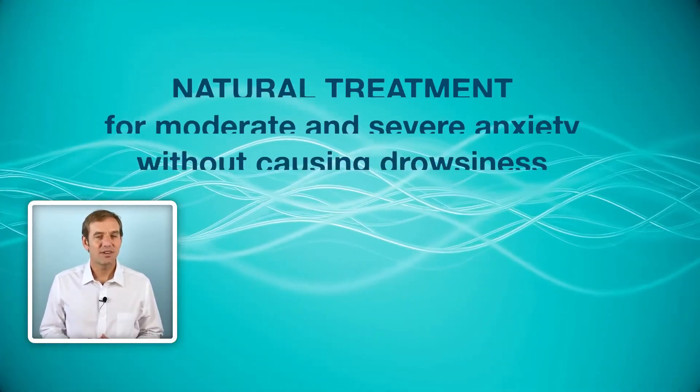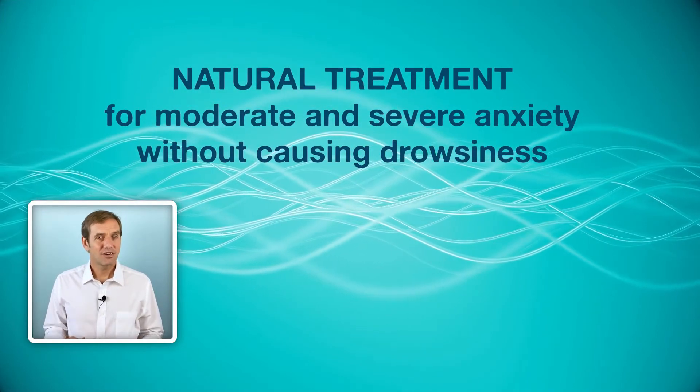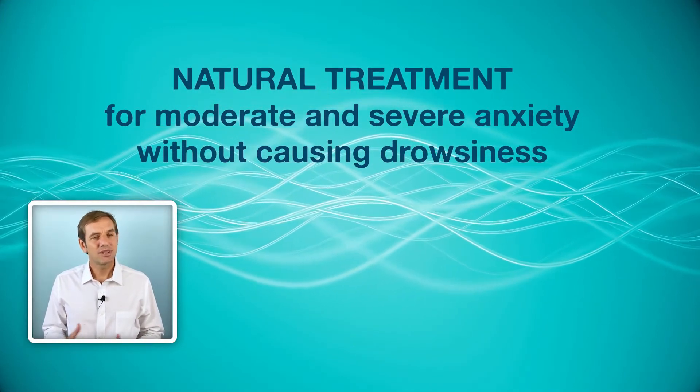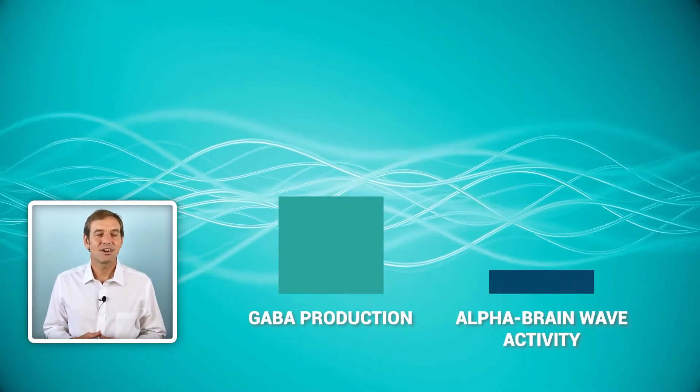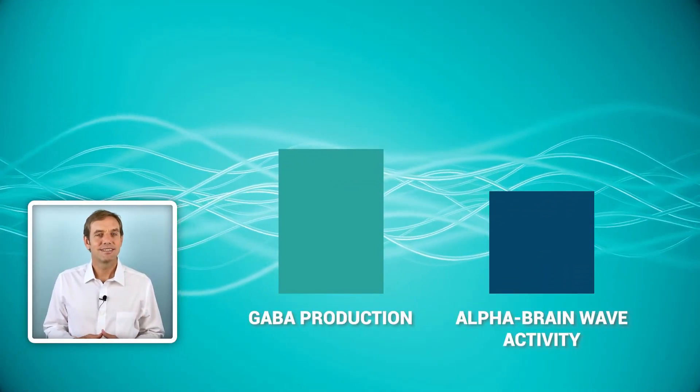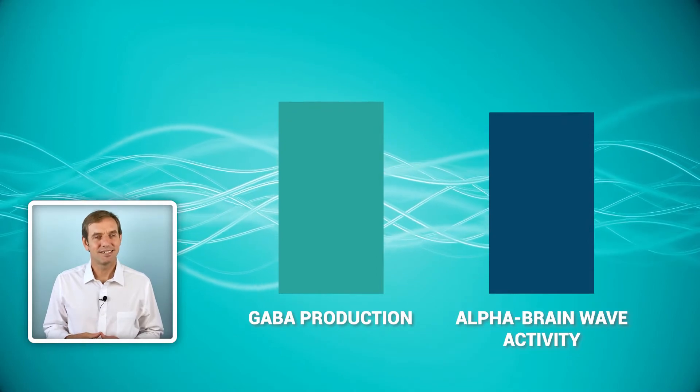There are two main mechanisms that L-theanine uses to create a calming effect: GABA production and alpha brainwave activity.